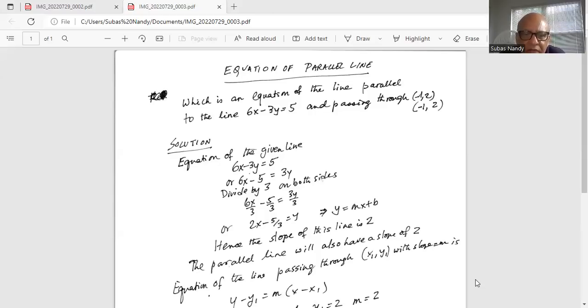So y equal to mx plus b. m is 2 and b is minus 5/3. The slope of this line is 2. The parallel line will also have a slope of 2.